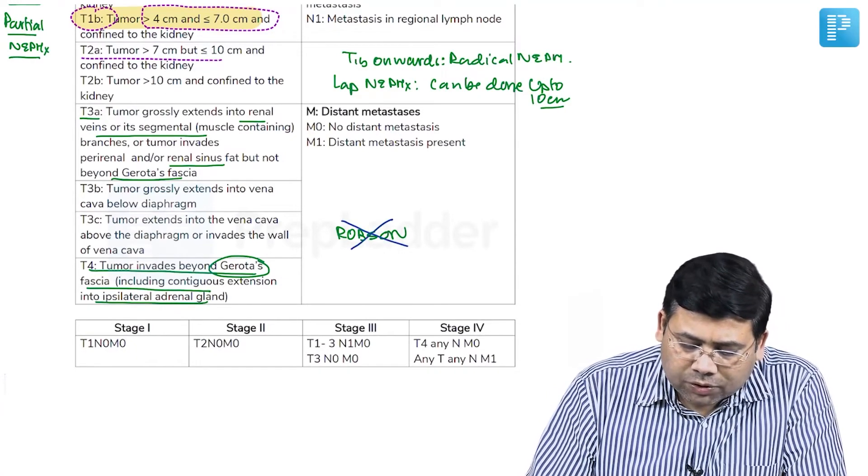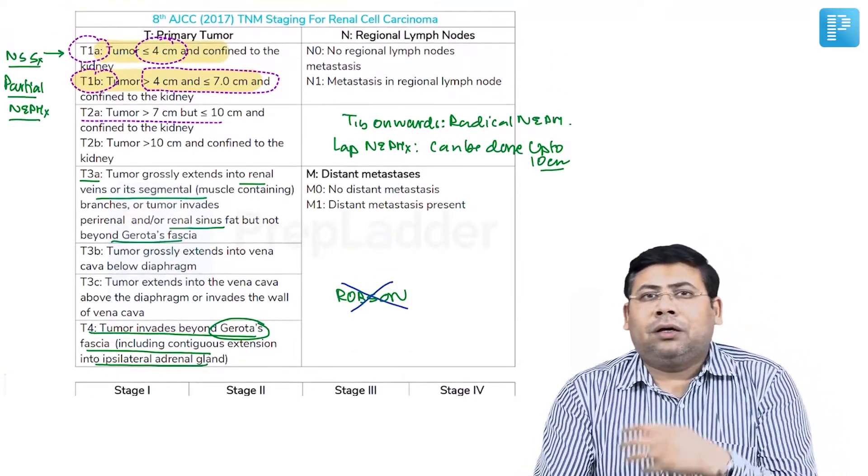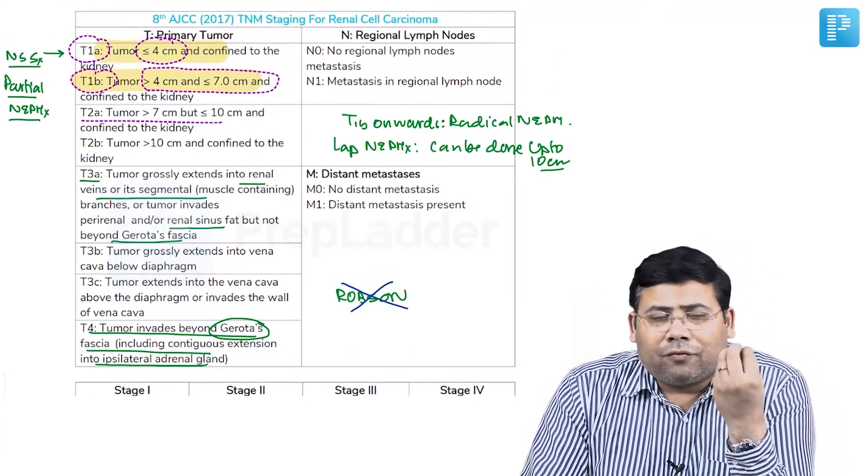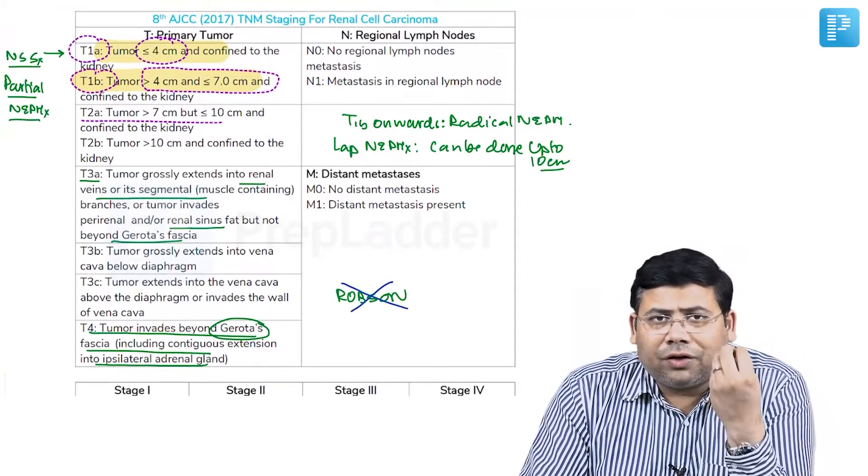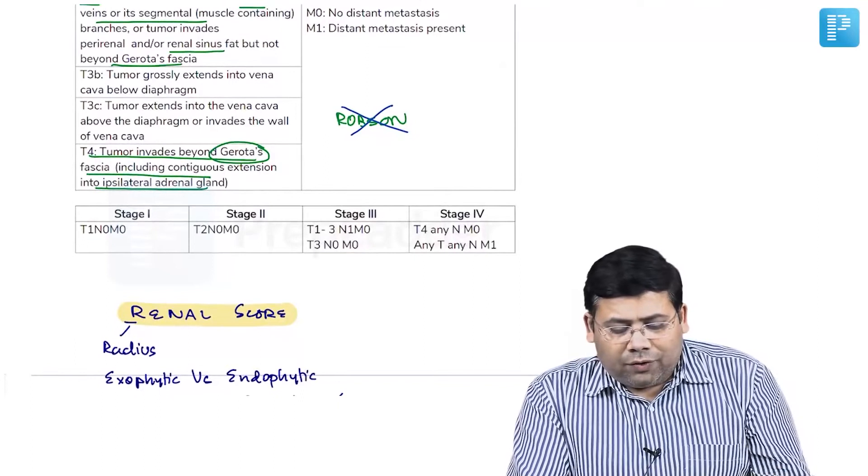To keep N staging simple: if regional lymph nodes are present, it's N1; if not, it's N0. The staging system is very easy. Stage 1 is T1 N0 M0. Stage 2 is T2 N0 M0.